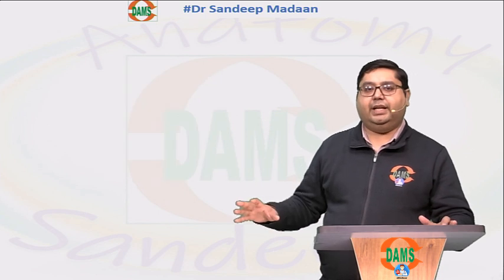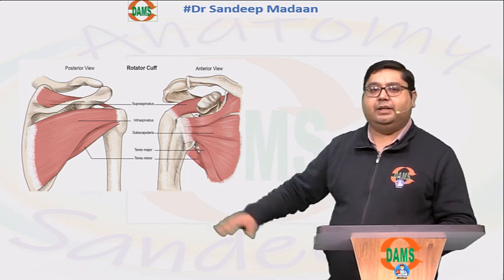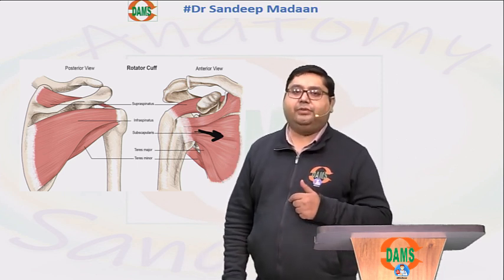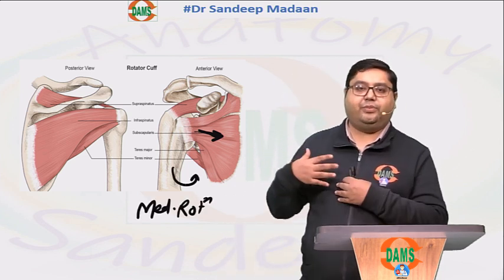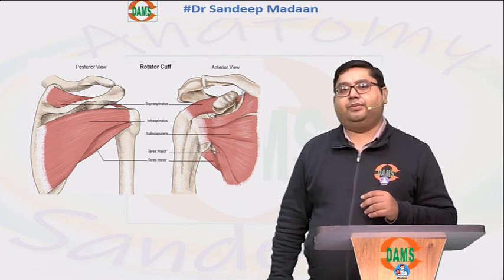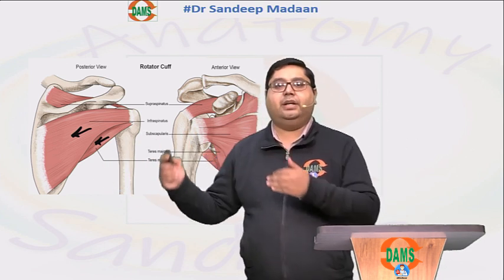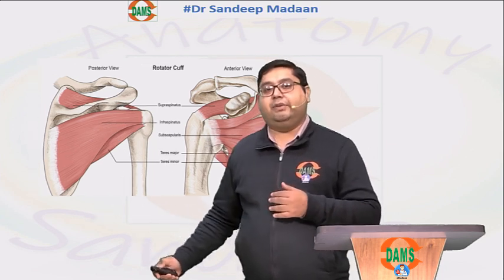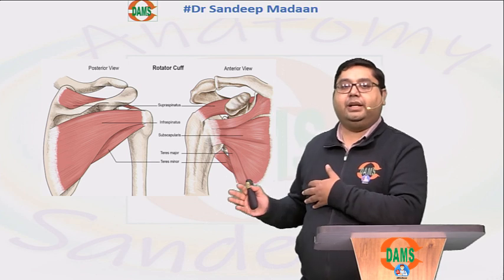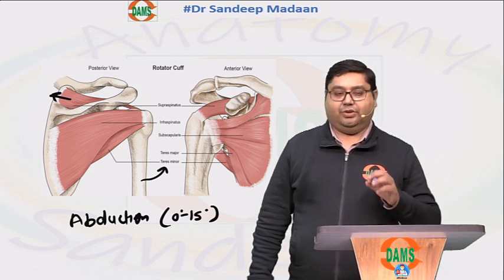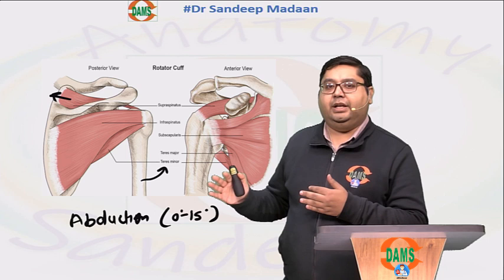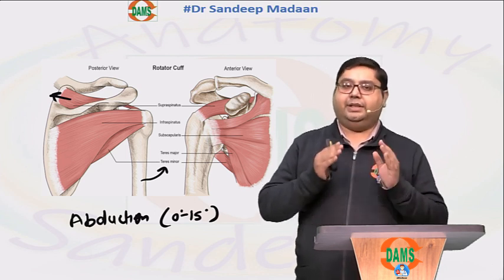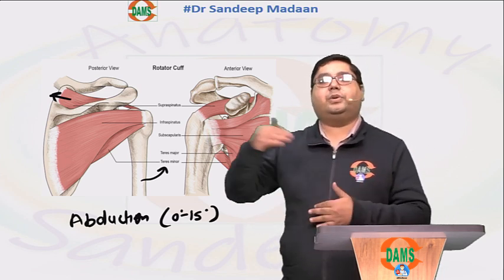If you put all these muscles together and visualize — subscapularis muscle is in front, so the pull will be from front. Which rotation will it do? It will do medial rotation because the pull is from front. Now, infraspinatus and teres minor pull from behind, so they will do lateral rotation. But look at supraspinatus — when it contracts it is neither front nor behind, so it will do abduction from 0 to 15 degrees. If you learn this way with basic visualization, you don't have to mug up everything.